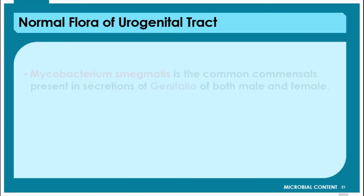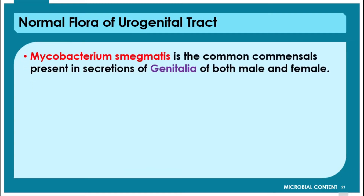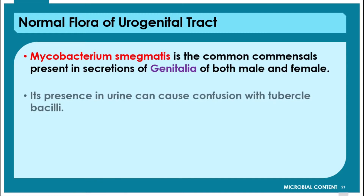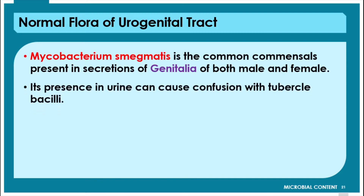In the urogenital tract, Mycobacterium smegmatis is a common organism present in the secretions of the genitalia of both male and female. Its presence in urine can cause confusion in the diagnosis of tubercle bacilli, because this organism can appear similar to Mycobacterium tuberculosis. This is the most important point to note.